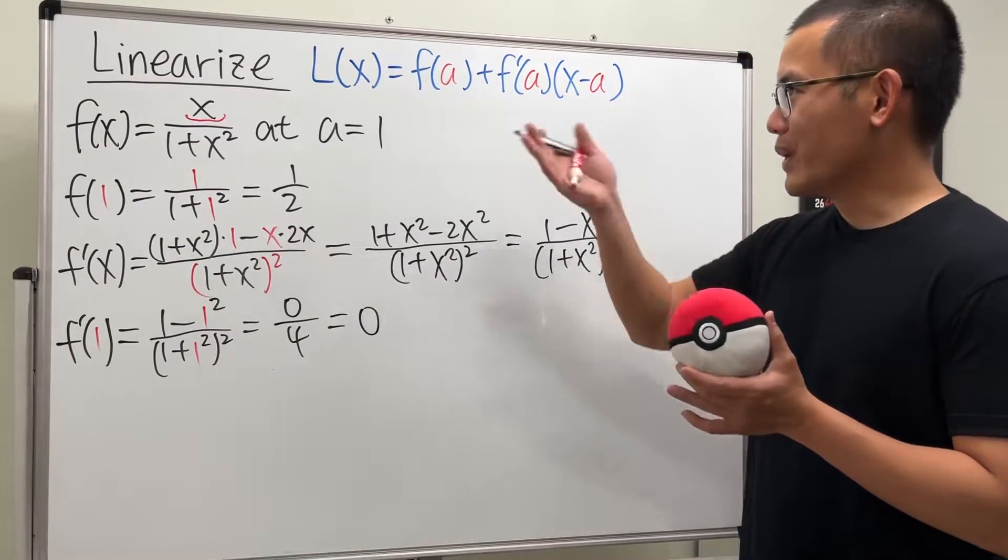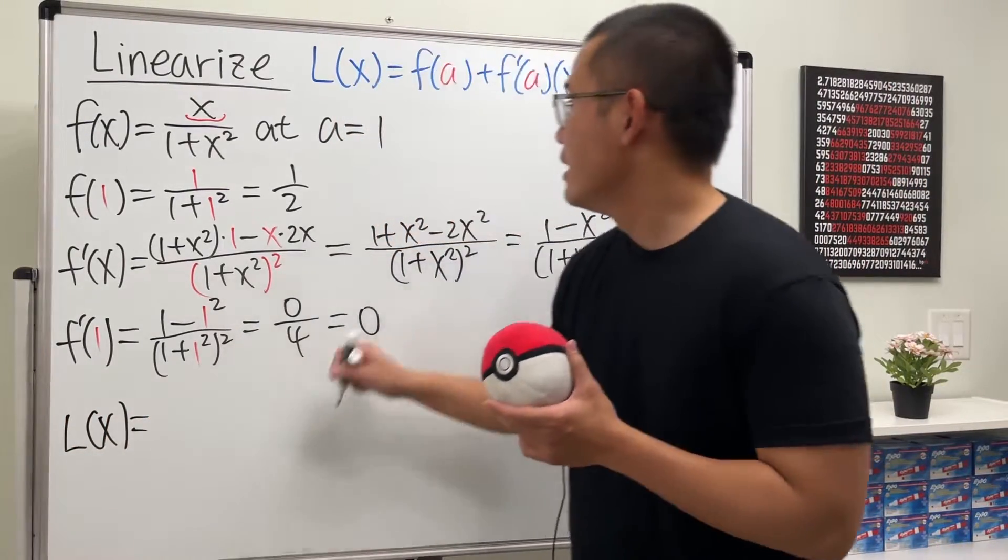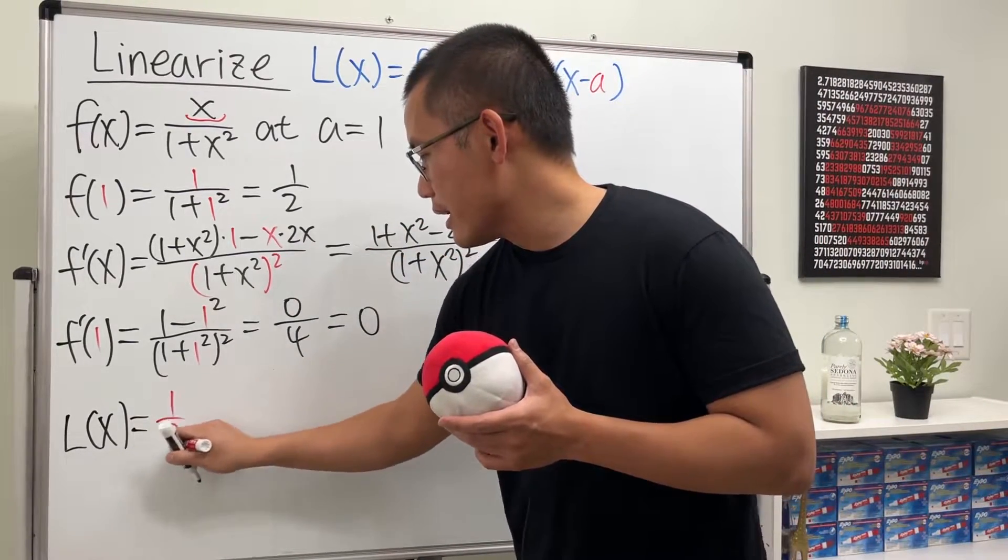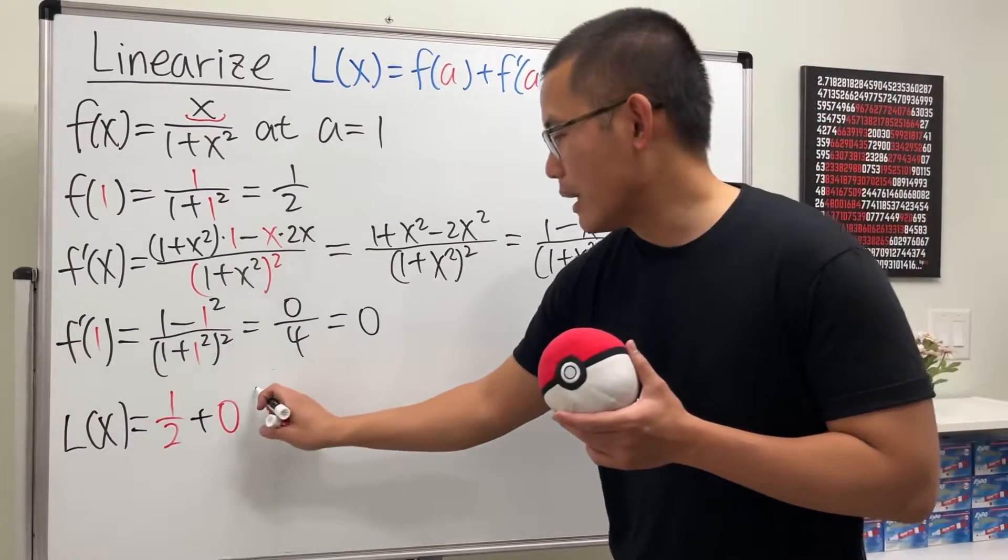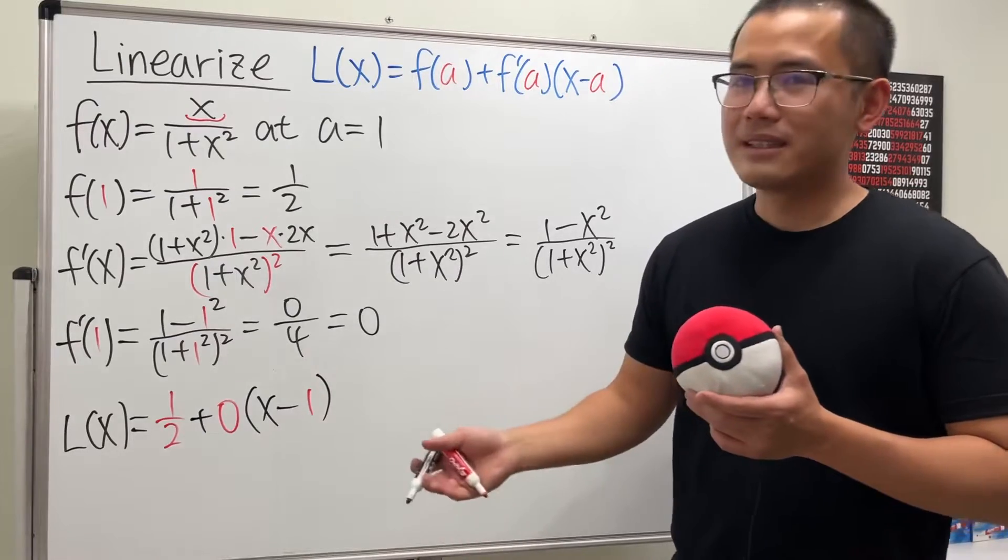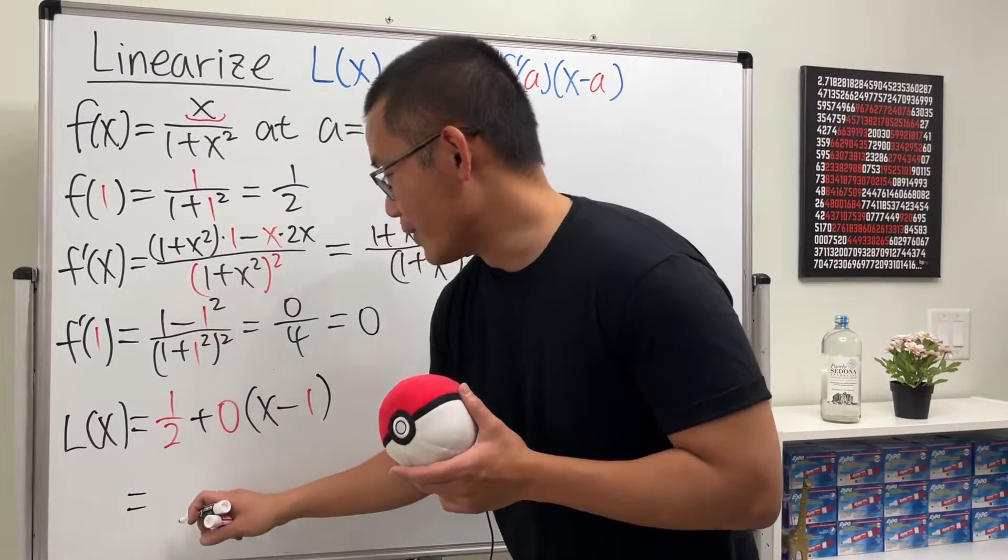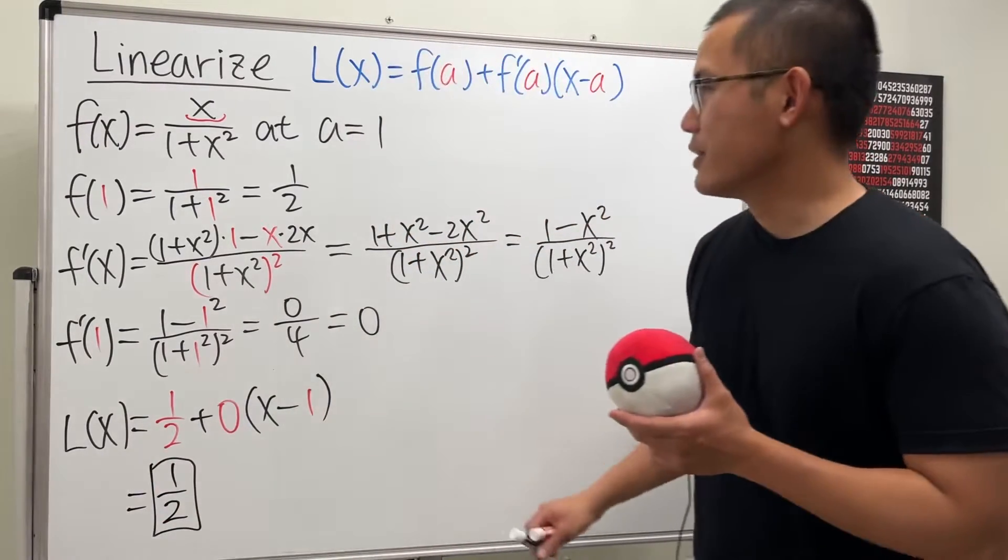So, in fact, we are going to end up with the following. The linearization is going to be f of a, which is just 1 over 2. And then we add the derivative, which is 0, and we multiply by x minus the a value, which is 1. And, in fact, the linearization is just going to be a horizontal line. And we just get 1 over 2. So, that's pretty much the linearization.